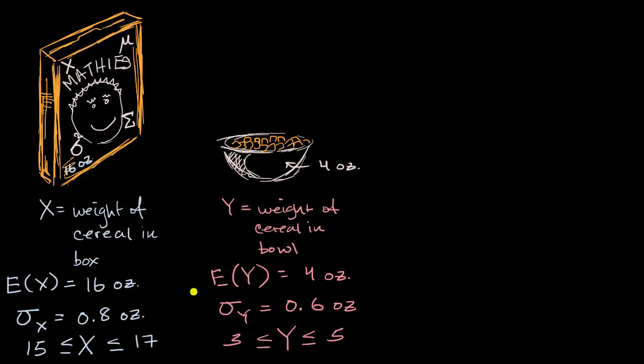So, given all of this information, what I want to do is, let's just say I take a random box of Mathies, and I take a random filled bowl, and I want to think about the combined weight in the closed box and the filled bowl. So what I want to think about is really X plus Y. I want to think about the sum of the random variables.